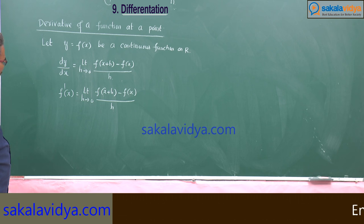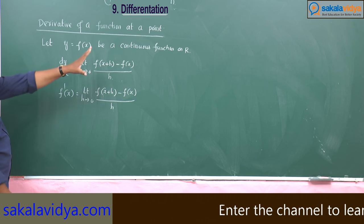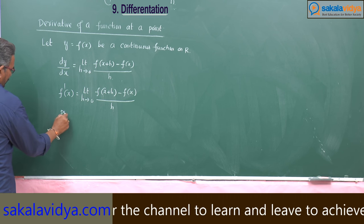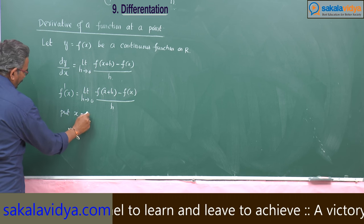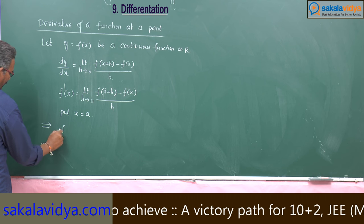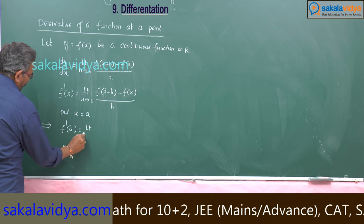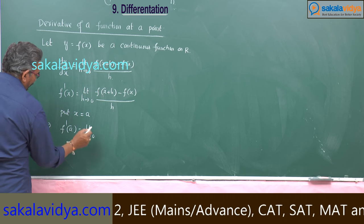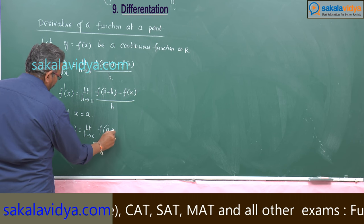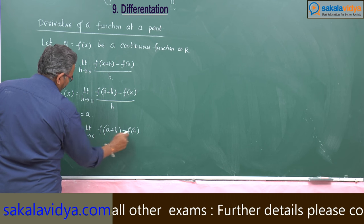Suppose at x is equal to a, a point in the given interval, if you want to find the derivative, put x equal to a. Then we get f dash a is equal to limit h tends to 0, f of a plus h minus f of a by h.